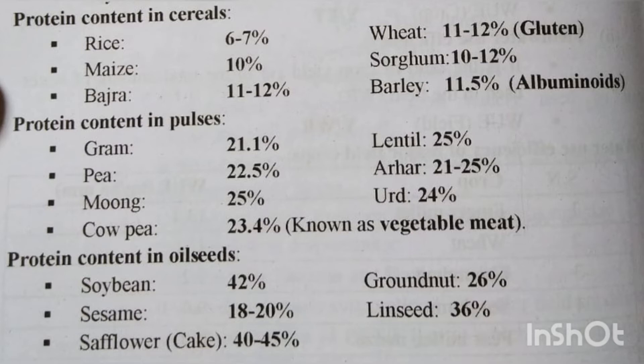Now pulses: Gram 21.1%, Pea 22.5%, Moong 25%, Cow pea 23.4% — जिसको हम लोग vegetable meat भी बोलते हैं — Lentil 25%, Arhar 21%, Urad 24%. तो pulses में देखो कितना है — 20, 22, 25, 24 इस टाइप का। सबसे ज्यादा मूंग में और Urad में, 21-25%।